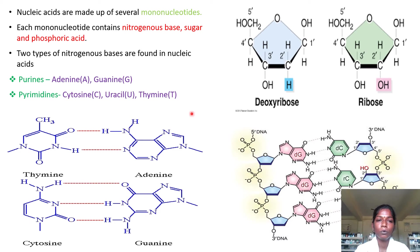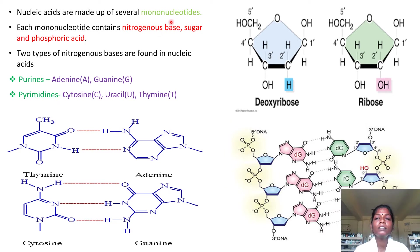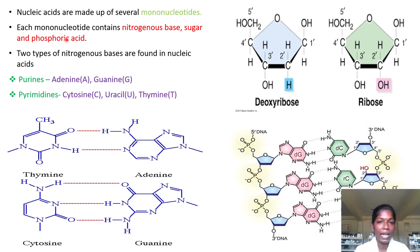Now we will see about nucleic acids. Nucleic acids are made up of several mononucleotides. Nucleotides are the basic building blocks of a nucleic acid. A nucleotide contains a nitrogenous base, a sugar, and phosphoric acid.